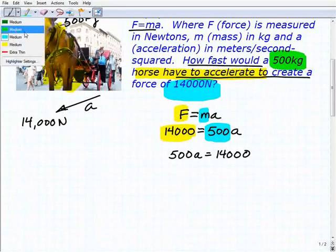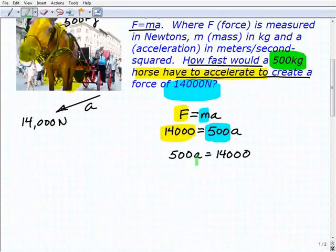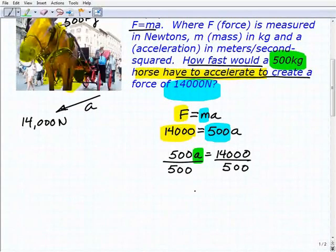So, how do we solve for a? What did we learn in the lesson to solve for this variable? Well, we're going to have to use an inverse operation. Because this is multiplication, because this is 500 times a, we're going to have to divide both sides of the equation by 500. So, we'll get a is equal to 14,000 divided by 500.